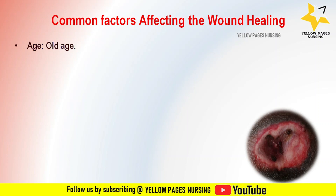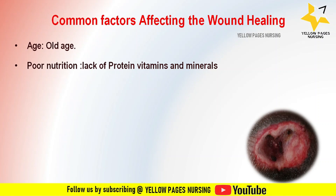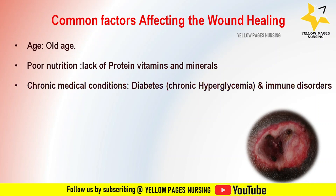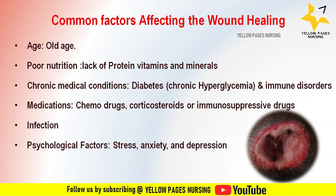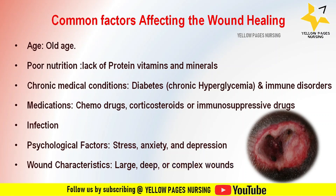Now let's discuss common factors affecting wound healing. First is age — wound healing takes more time in old age. Next is poor nutrition — lack of protein, vitamins, and minerals such as zinc and iron can delay wound healing. Chronic medical conditions like diabetes, chronic hyperglycemia, and immune disorders can affect healing. Medications such as chemotherapy drugs, corticosteroids, or immunosuppressive drugs interfere with wound healing. Infection at the wound site can delay healing. Psychological factors such as stress, anxiety, and depression can affect wound healing. Finally, wound characteristics — large, deep, or complex wounds may take longer to heal.